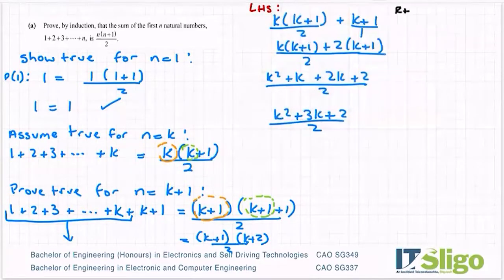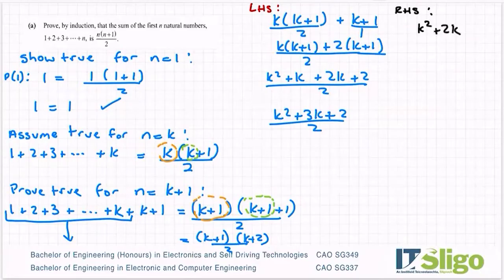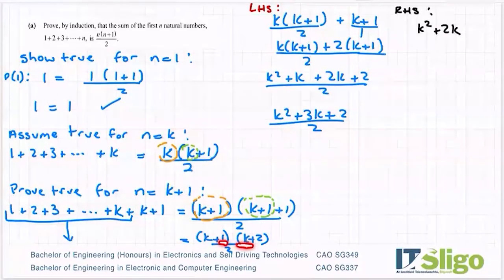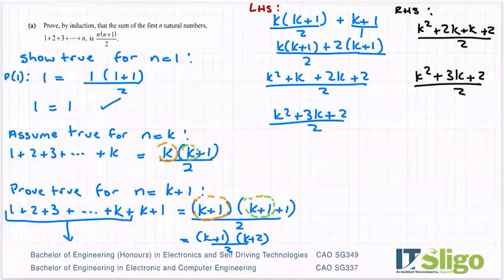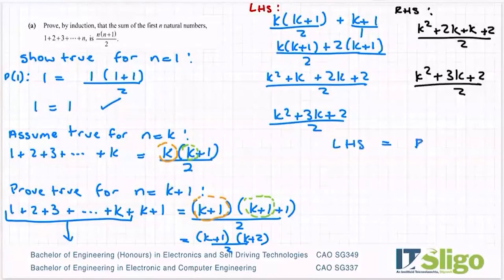I'm going to do the right hand side now, which is this one here. I'm just going to multiply it out. That's all I have to do to that right hand side to show that it's the same as this one. So k by k, k squared, k by +2 is +2k and then +1 by k is +k and then +1 by 2 is +2. Of course that's over 2. Let's tidy him up. k squared + 3k + 2 over 2. So I would conclude then that the left hand side equals the right hand side.